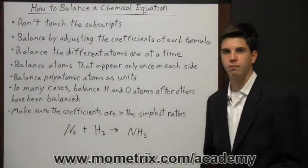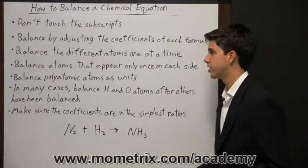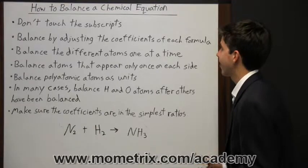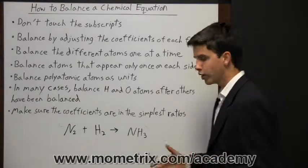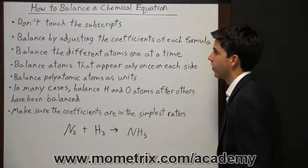In order for a chemical equation to be balanced, there must be the same numbers of each atom on both sides of the equation. Now in order to balance a chemical equation, you're going to have to do some tweaking to the amounts of atoms on both sides, and so there's some rules and guidelines to follow.